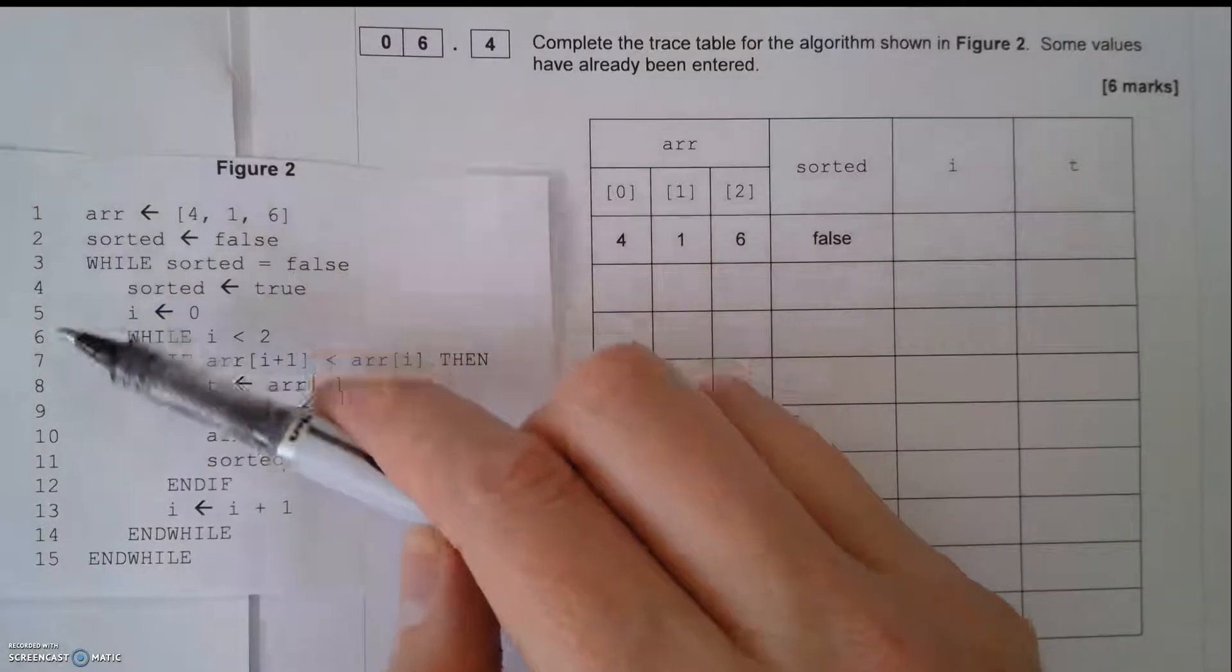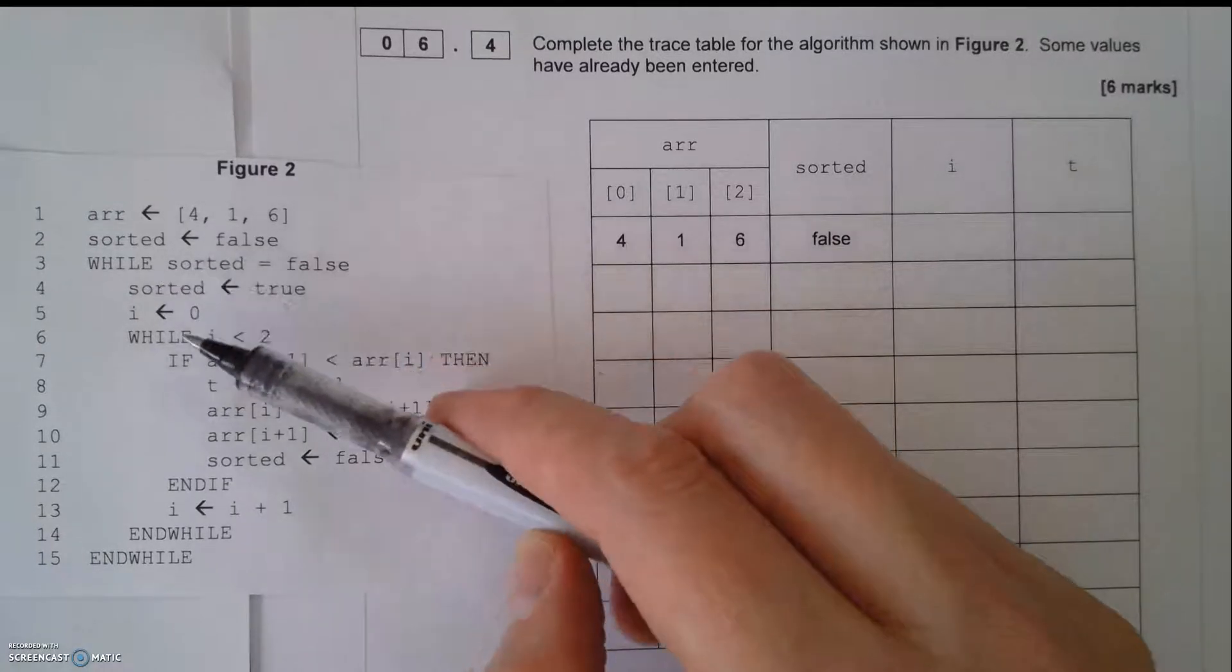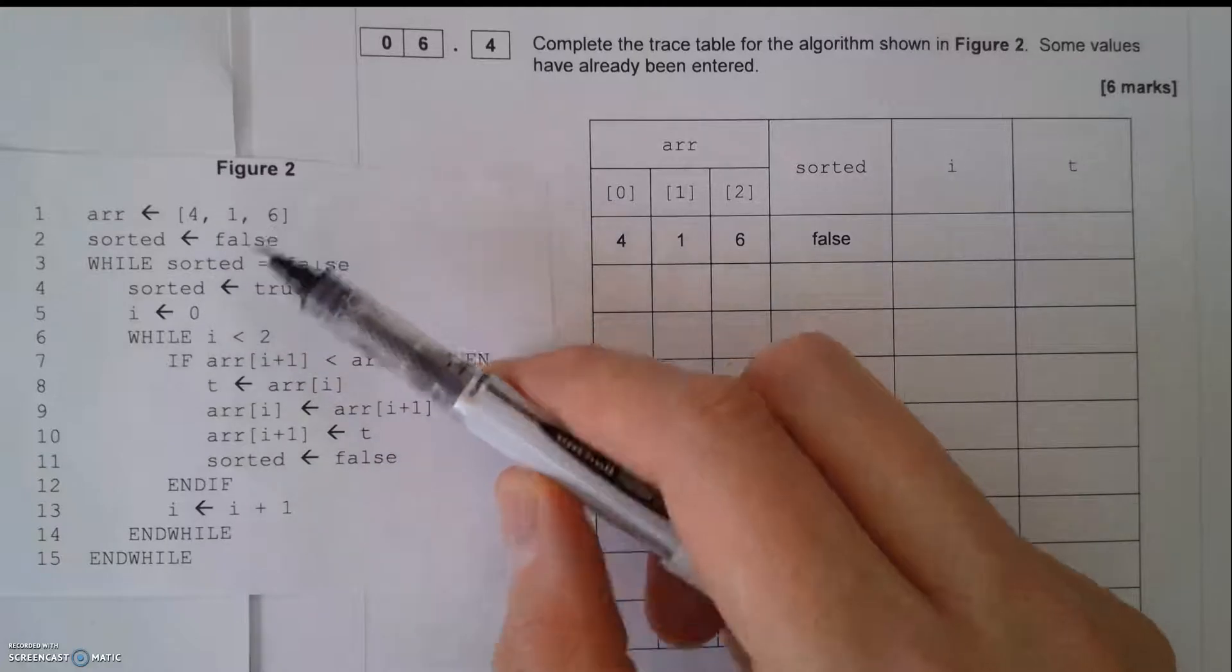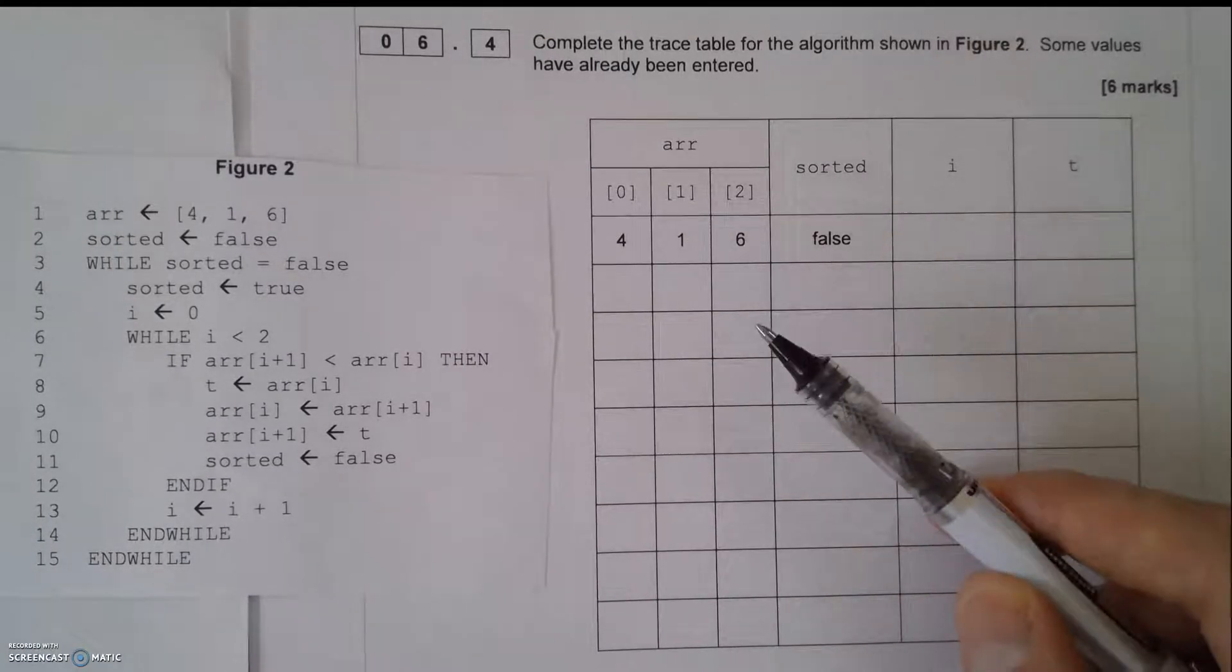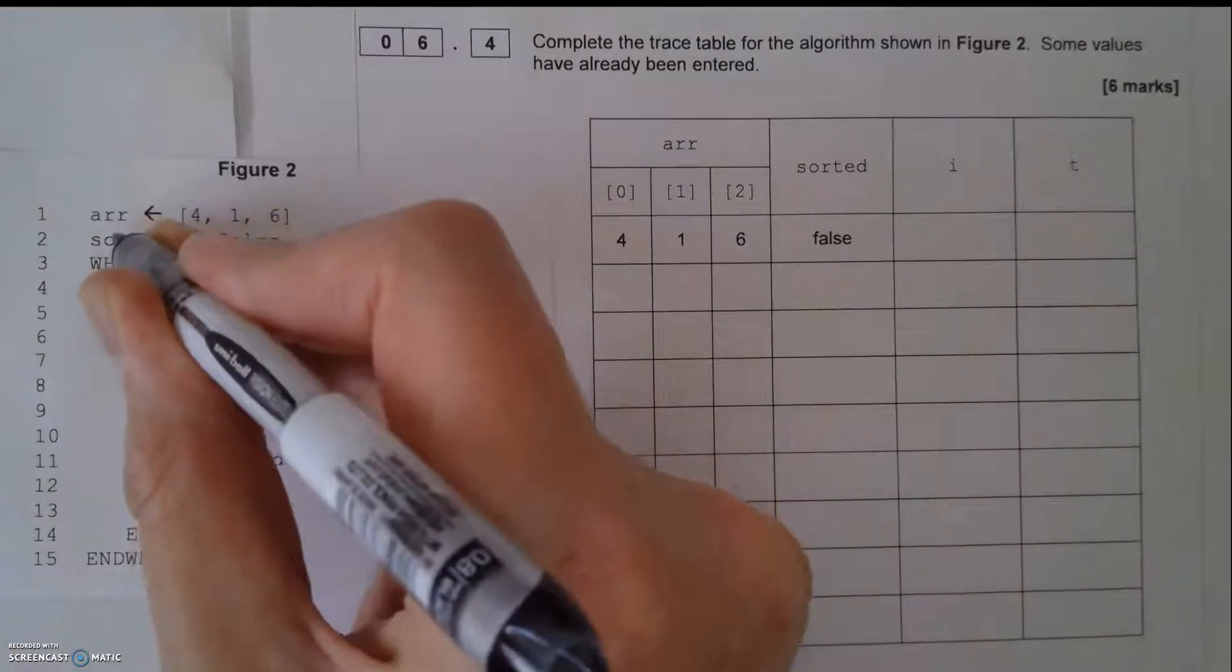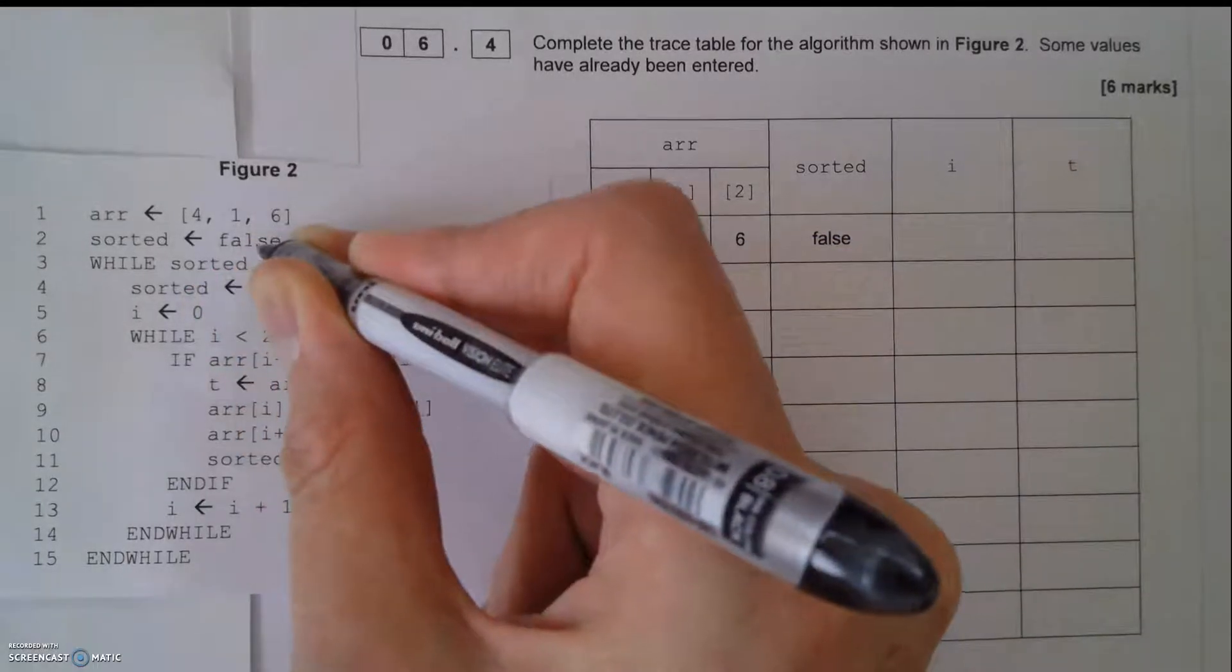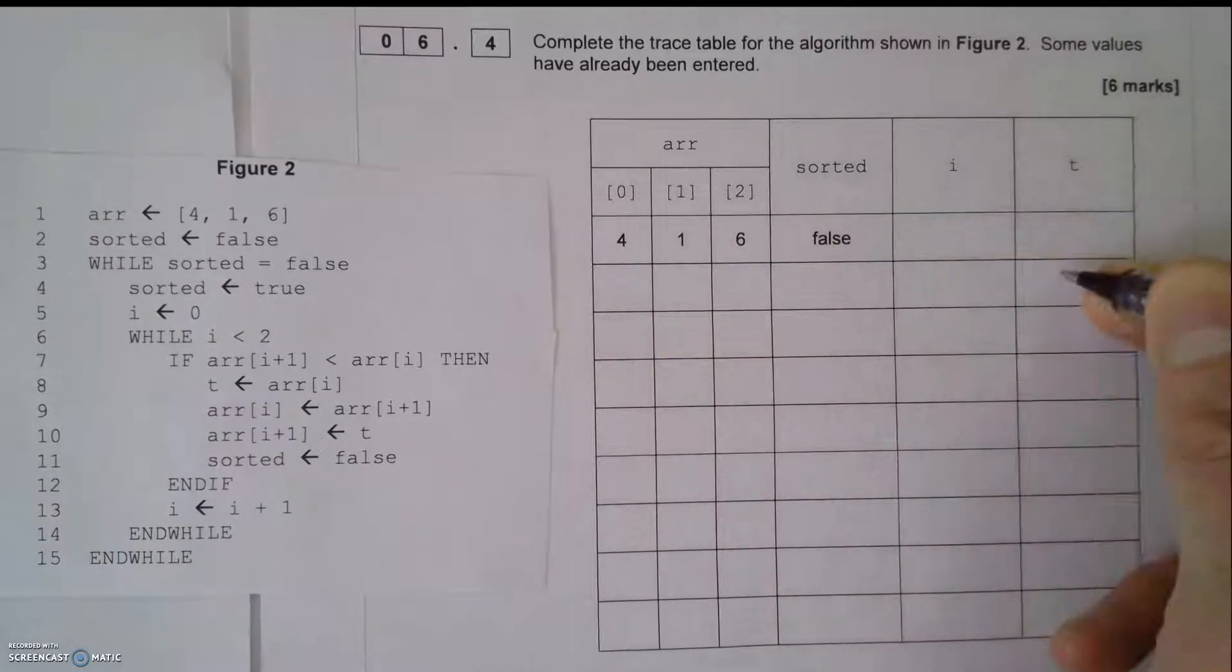The algorithm is numbered 1 to 15. There's lots going on in this algorithm. I've got while loops, conditions, variable assignments, and an array. So my job for six marks in the exam is to trace this through and fill this table up. So we'll start with looking at that. Array 4, 1, 6 - those values have already been written there by the exam board. And sorted equals false. That's already written there for me. So I'm going to start on this second line here.